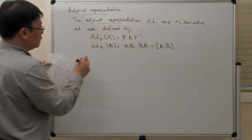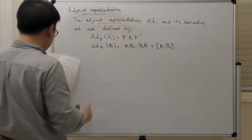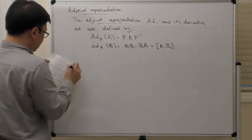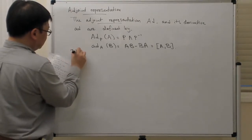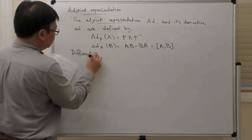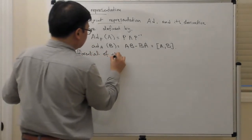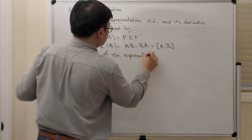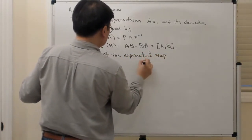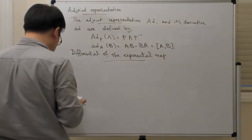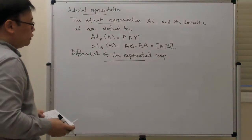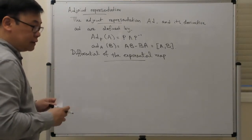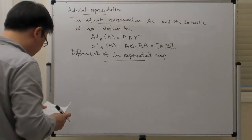With those things, in particular the little ad operation, you have the differential of the exponential map. We're going to define the exponential map in a right-trivialized sense, and I will try to explain what I mean by that.